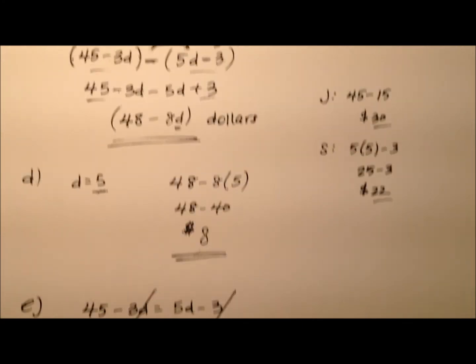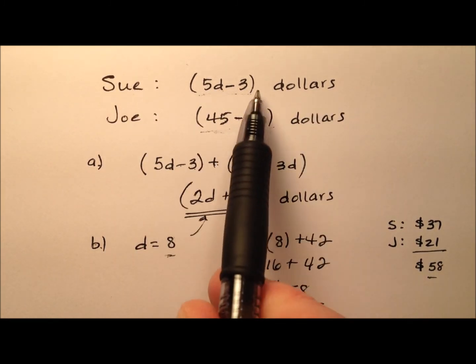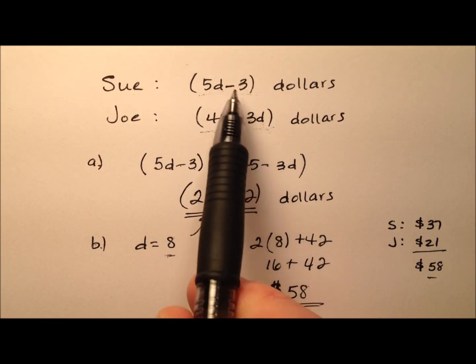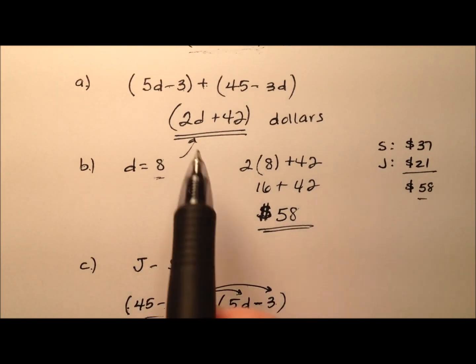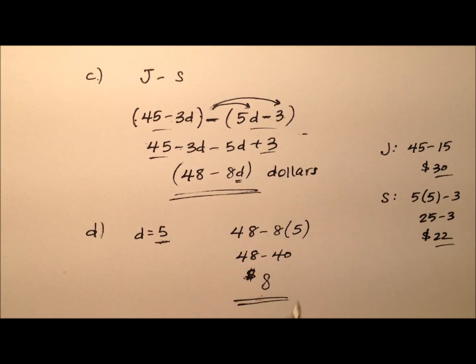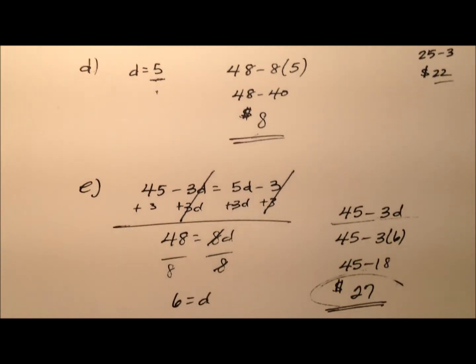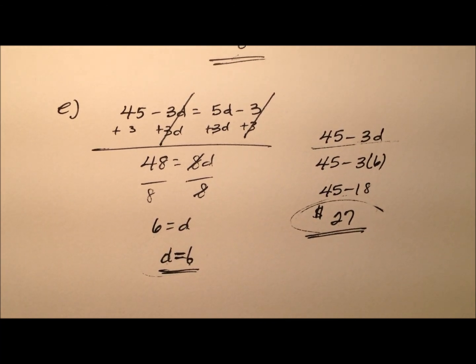So that's how we can work with some expressions. Joe and Sue both had money, we didn't know exactly how much, but we had an expression for each one. We were able to work with the expressions, plug in values of d, and we were also able to solve for values of d on our own and plug them in.